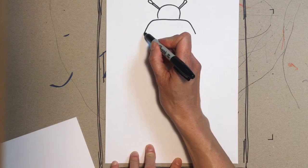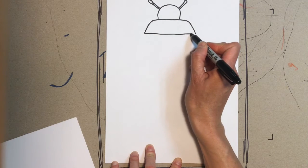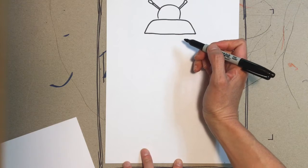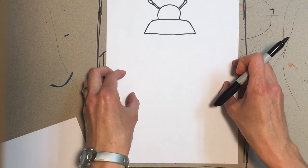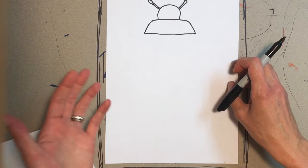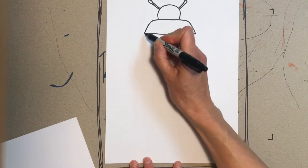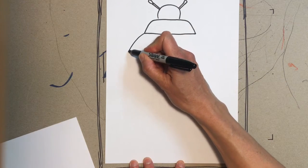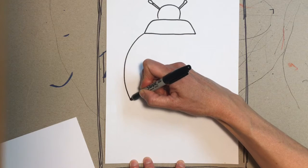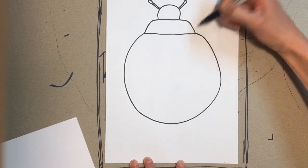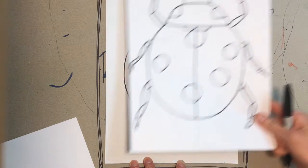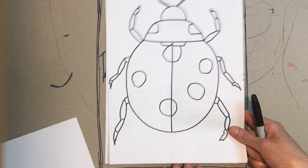Now you're gonna make the body of the ladybug. You don't want to get too close to the edge. You still want to draw big but you want to have room for the legs. So you're gonna start on one side and work your way around. That's a little bit smaller than I meant to, but that's okay. You can see this is a little bit lower but that's fine. It's still gonna be pretty big.